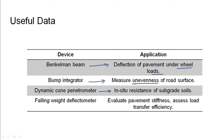A dynamic cone penetrometer is a device used in geotechnical engineering for measuring the in-situ resistance of the subgrade soils. A falling weight deflectometer is used to evaluate the pavement stiffness and also assesses the load transfer efficiency.